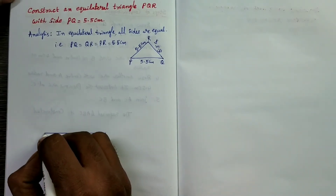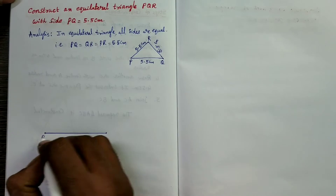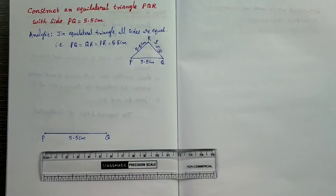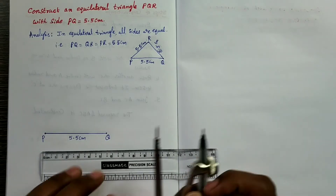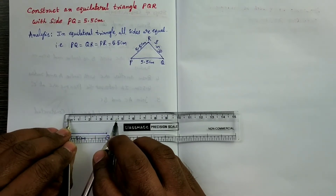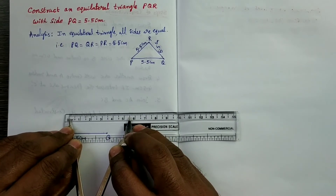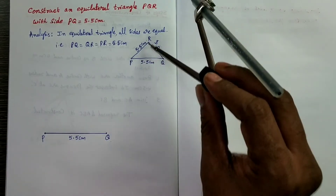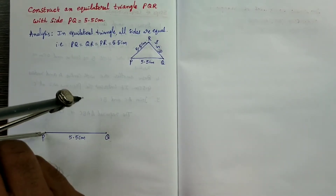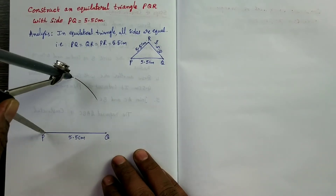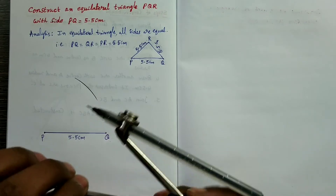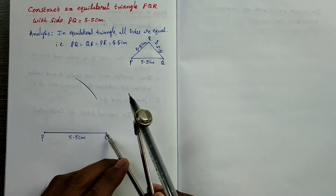This is the length PQ, which is 5.5 centimeters. Next, take a compass and set a radius of 5.5 centimeters — that means place the compass point at 0 and the pencil point at 5.5. Take carefully. PR length is 5.5 centimeters, so draw an arc from center P with radius 5.5 centimeters. QR length is also the same, since this is an equilateral triangle.